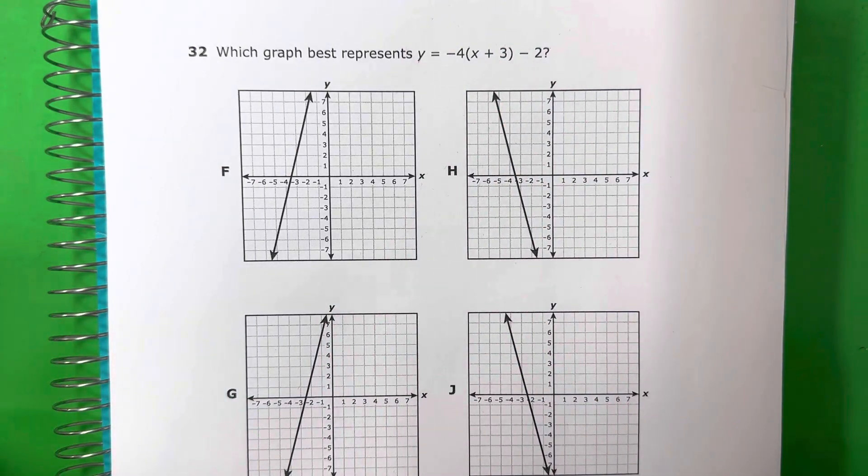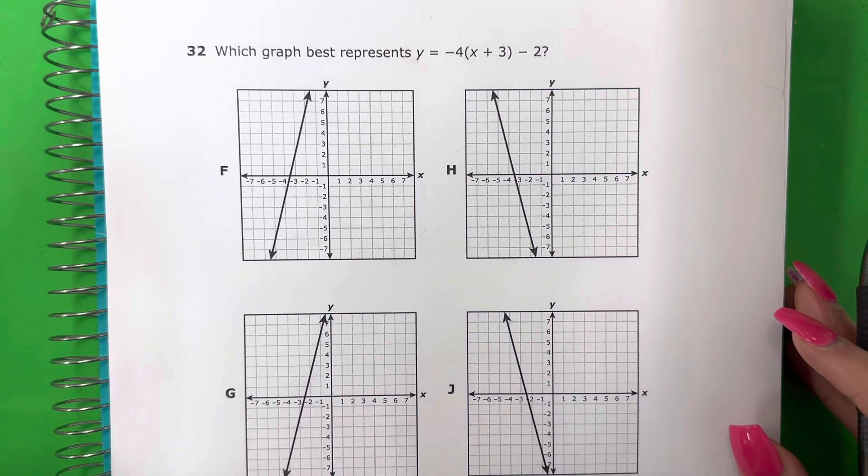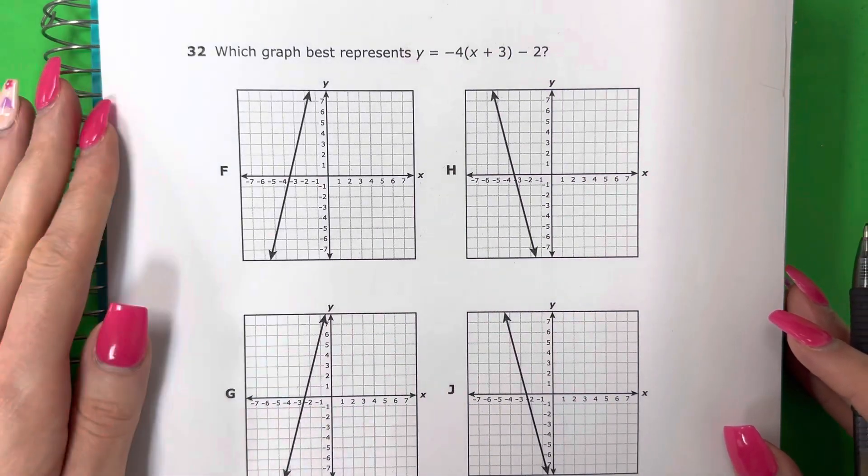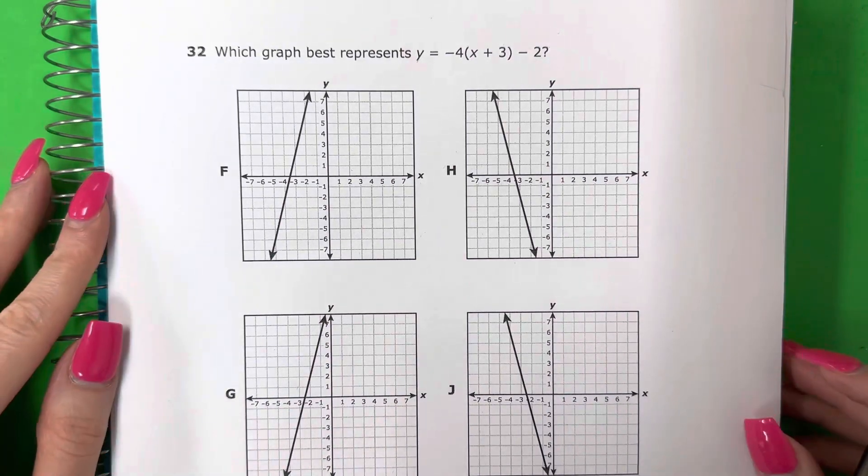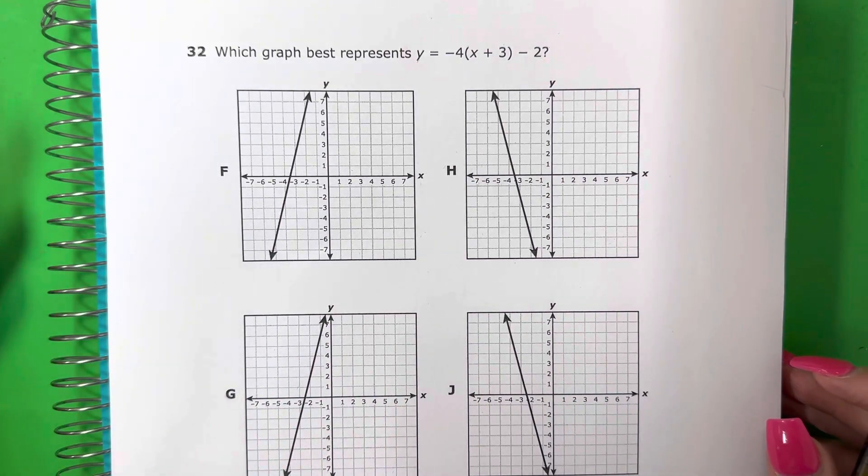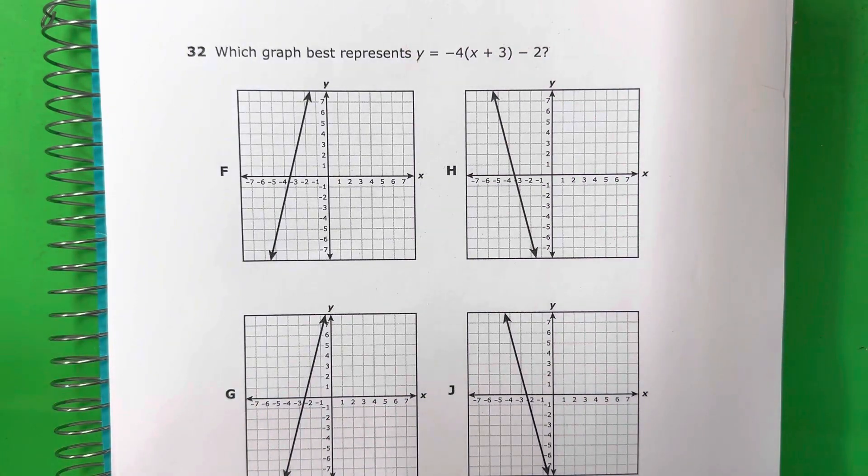I'm going to show you two ways to do this. Voy a mostrarles dos maneras para hacer eso. First, the shortcut with the calculator. Primero el camino corto con la calculadora. And then afterwards, we can do it by hand. Y después podemos hacer por mano.